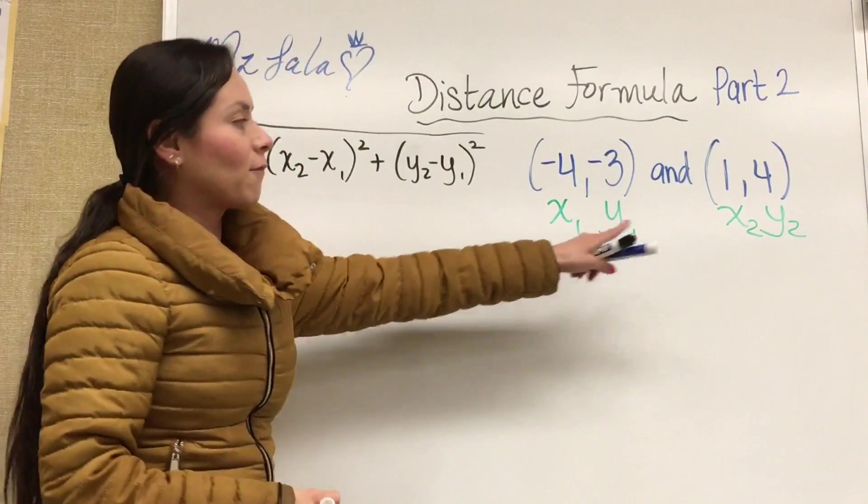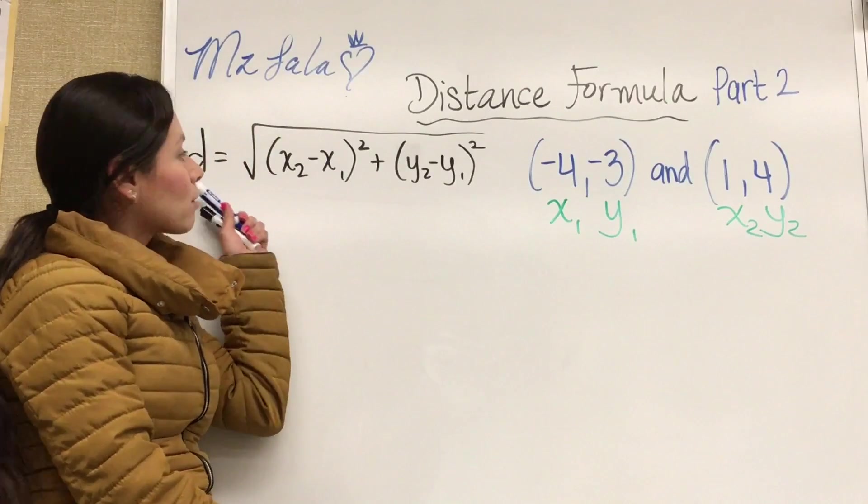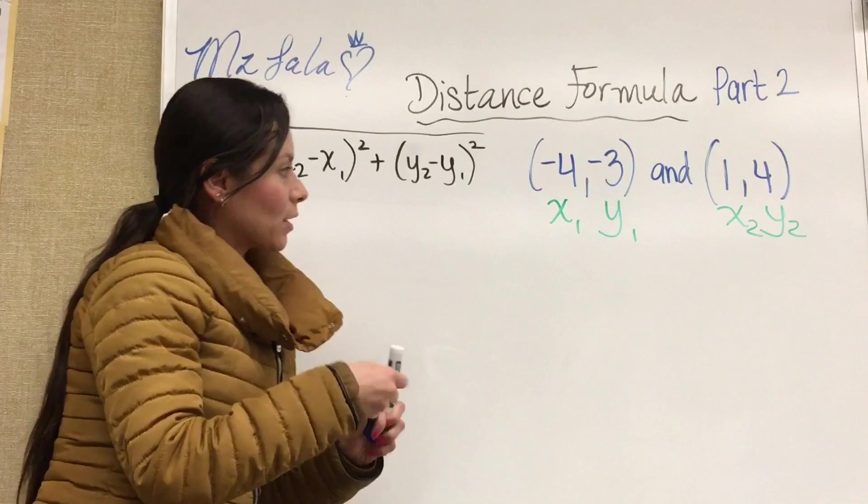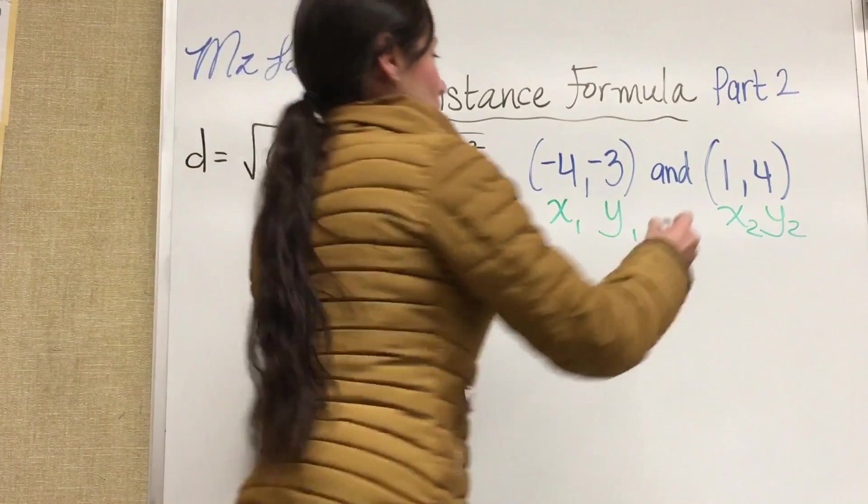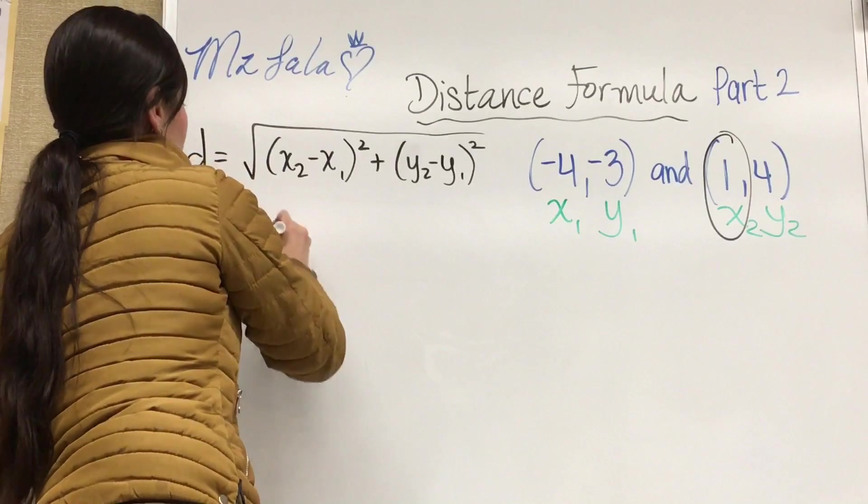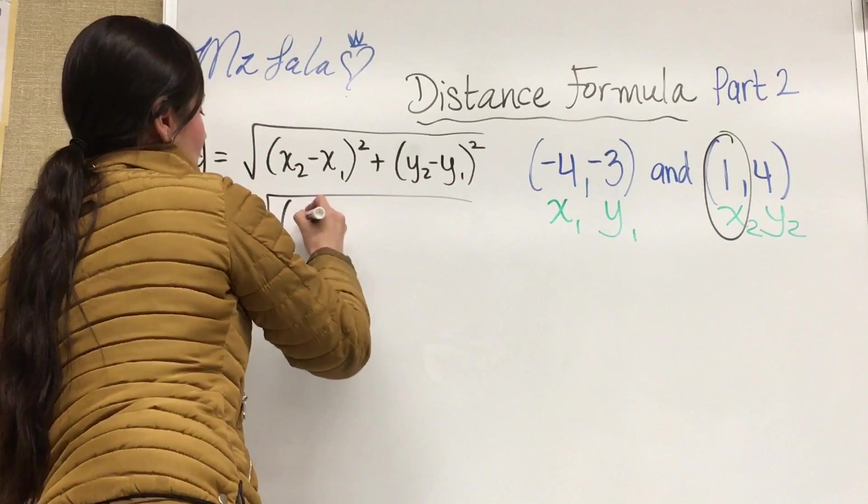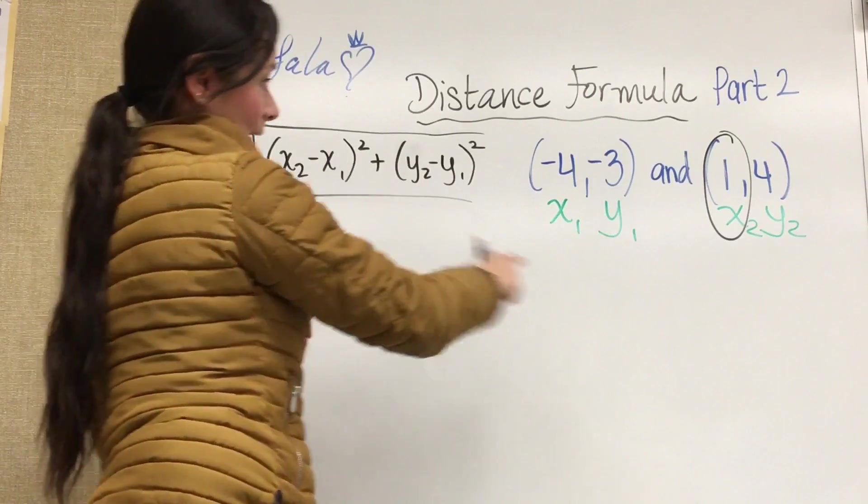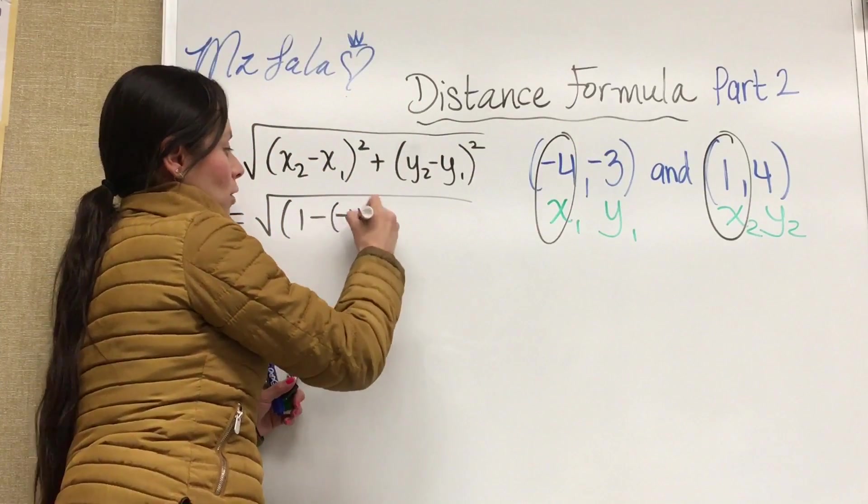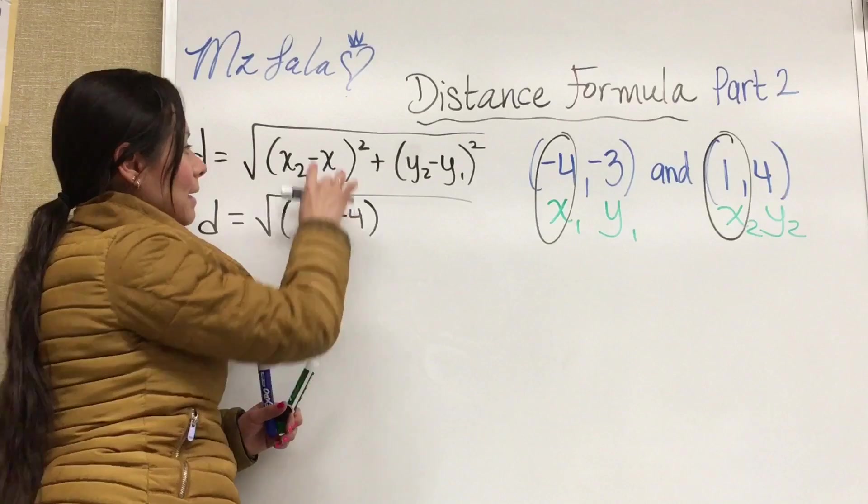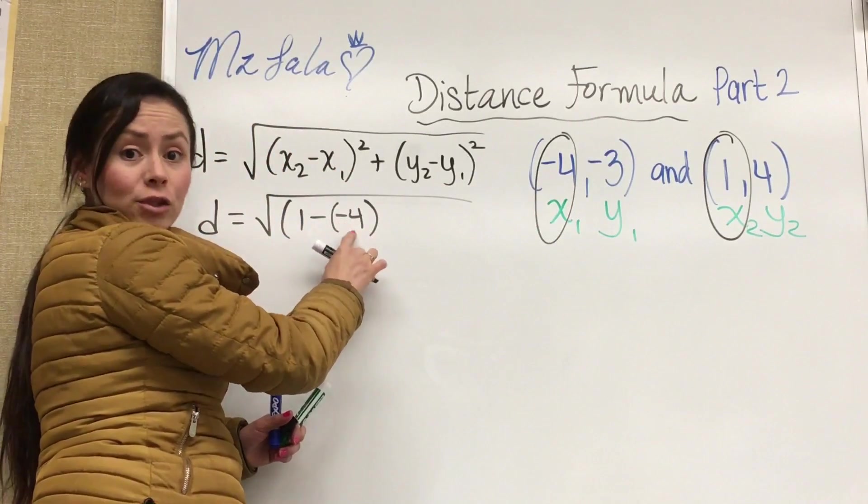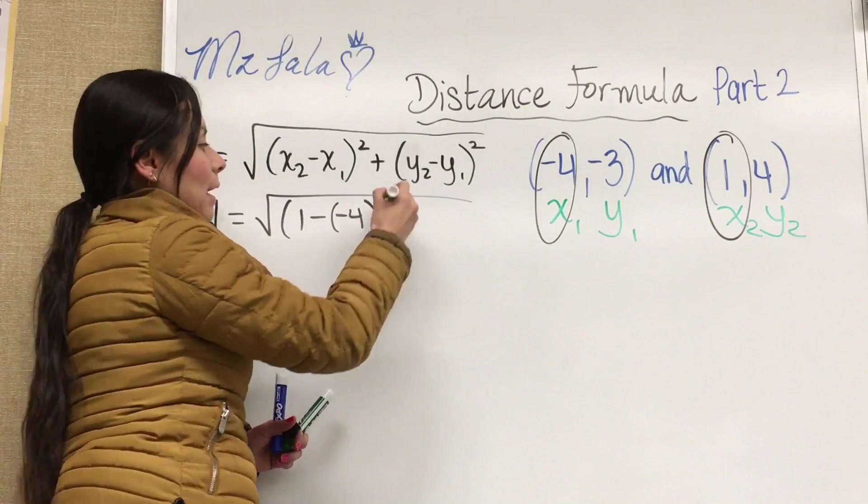So now that we've identified all the values we can now substitute it into the distance formula. So if we notice here we're gonna have the second X would be 1. So that would be the second X would be 1 minus our first X which is right here negative 4. So you notice right here this minus has to do with the formula but then this is a negative 4 so you must put an extra negative for that 4.